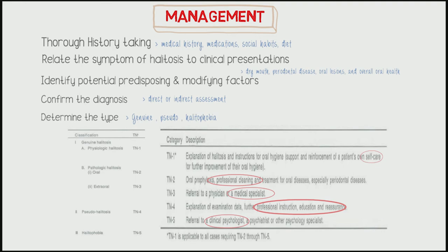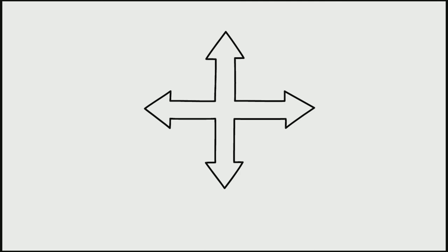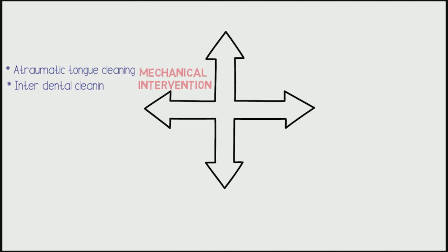Treatment of halitosis begins with mechanical reduction of microorganisms, involving atraumatic tongue cleaning, tooth brushing, interdental cleaning using proxabrushes, dental floss, water pick devices, and professional scaling and root planing. Next is chemical intervention — reduction of oral microbial load using antimicrobial dentifrices and mouthwashes.